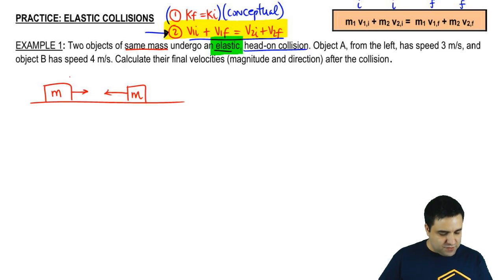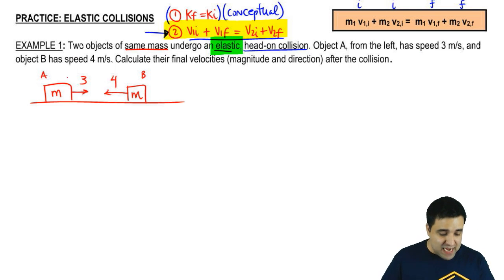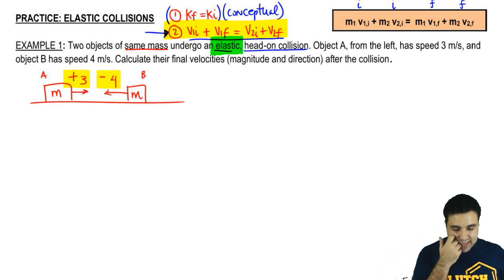Object A from the left, so this has to be A, and therefore this is B, has speed of three, and object B has speed of four. Remember, opposite directions, opposite signs, plus three, minus or negative four. Please don't forget the negative four, or you're going to get the wrong answer.